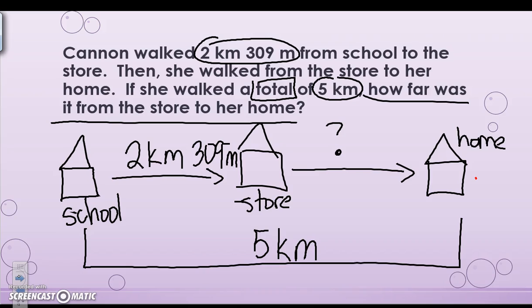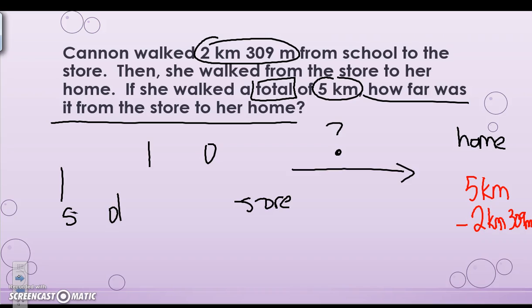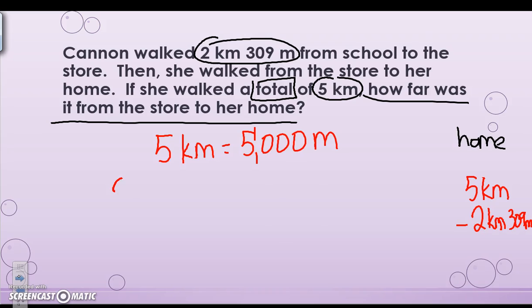So I have, for my problem, 5 kilometers minus 2 kilometers and 309 meters. I'm going to make some room for myself so I can subtract and have enough space. Now I know that I'm going to have to convert here because I don't have the same unit. So 5 kilometers equals 5,000 meters, and 2 kilometers 309 meters equals 2,309 meters.